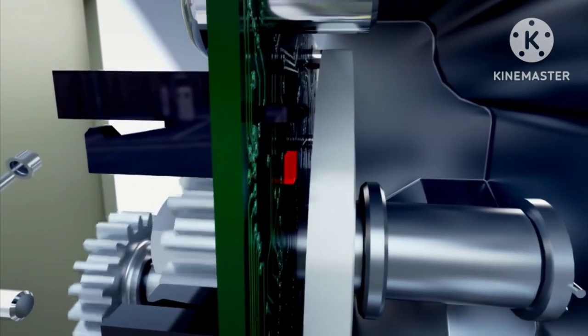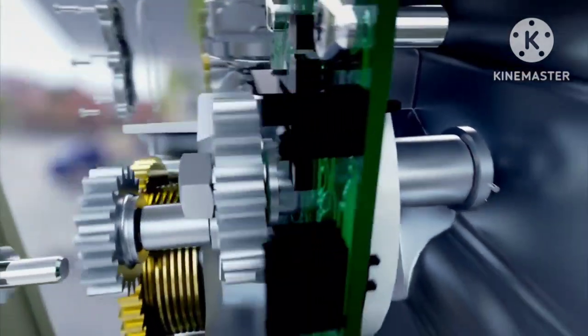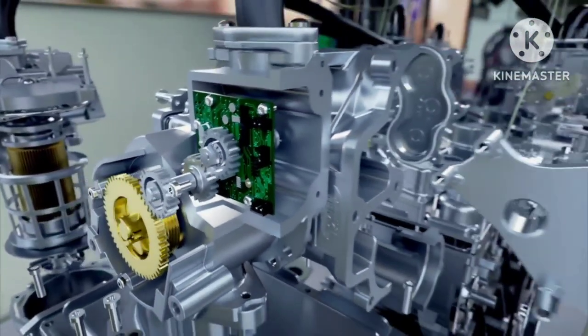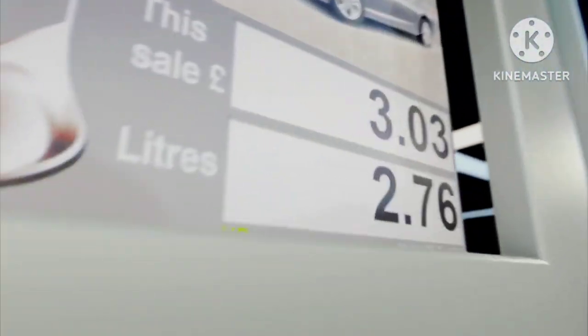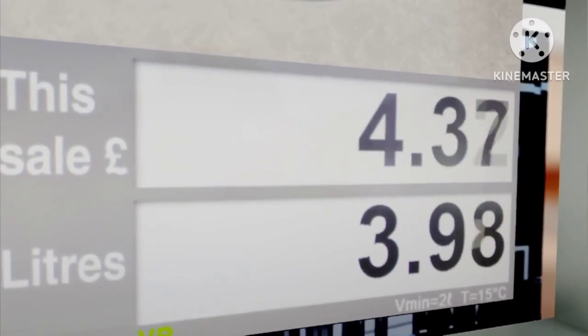A computer picks up these magnetic pulses and records each rotation. This system counts up the gallons with extreme accuracy. So what you see is what you get.